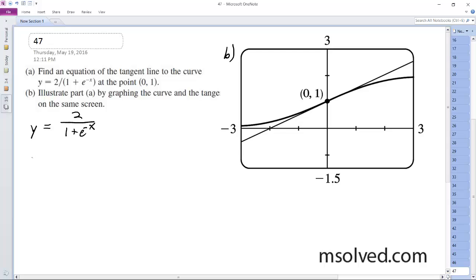Using the quotient rule, y prime is equal to 0 times 1 plus e raised to the negative x minus 2 times the derivative of this, which ends up being negative e raised to the negative x, all over quantity 1 plus e raised to the negative x squared.